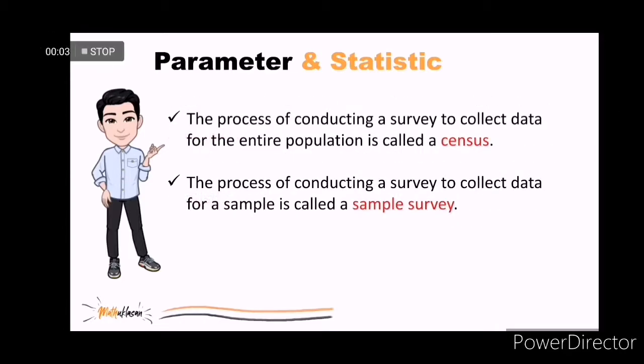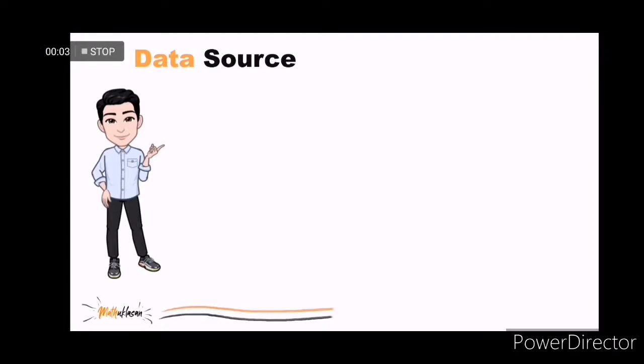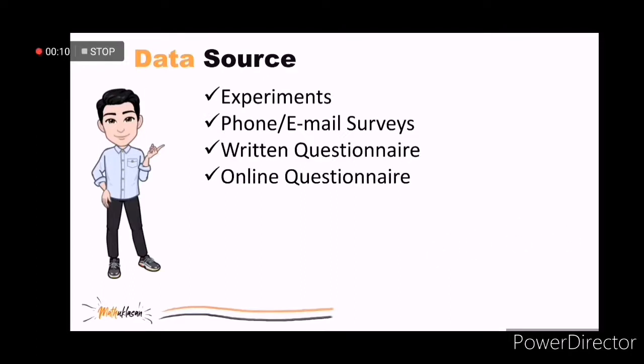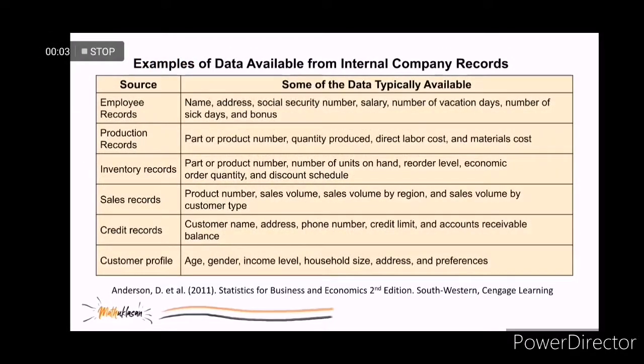Remember that the process of conducting a survey to collect data for the entire population is called a census, while the process of conducting a survey to collect data for a sample is called a sample survey. Data can be obtained from existing sources or from experiments, phone or email surveys, written questionnaire, online questionnaire, direct observation, personal interview, and written documents. In business research, you can use the data available from internal company records.